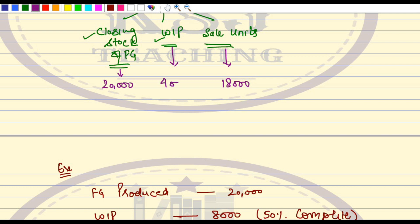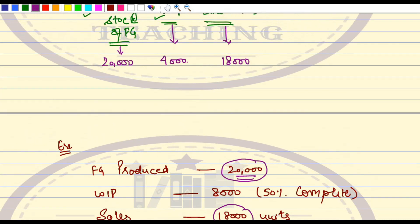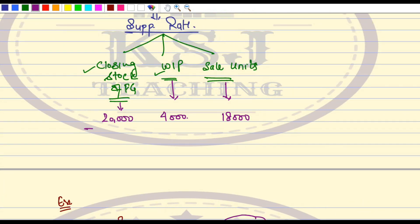Now try to understand very carefully. We have produced 20,000 units in a particular period and we have sold 18,000 units. That means your closing stock of finished goods is not 20,000 — your closing stock of finished goods is only 2,000. Because out of the 20,000 units you produced, you have already sold 18,000 units. So your closing stock of FG is 20,000 minus 18,000, which is only 2,000. Do not commit this mistake.